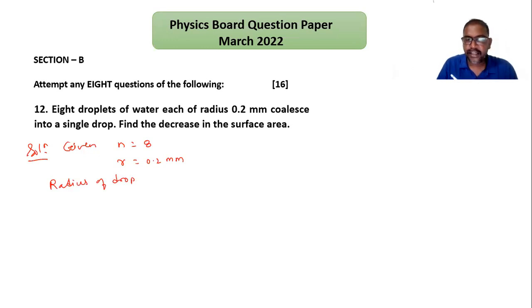Radius of drop which is formed by using 8 droplets is given by formula R equals n raised to 1/3 times small r, so 8 raised to 1/3 times 0.2. 8 raised to 1/3 is 2, so 2 times 0.2 equals 0.4 mm.